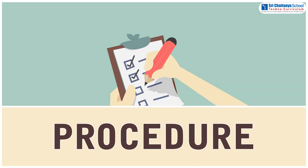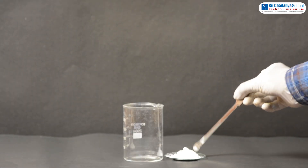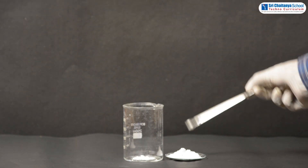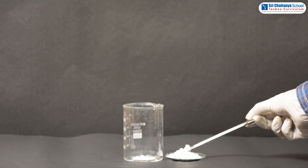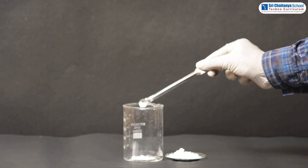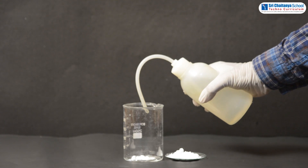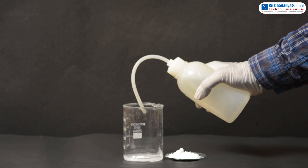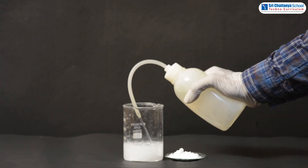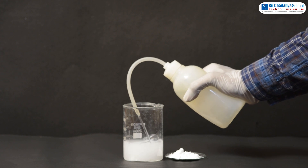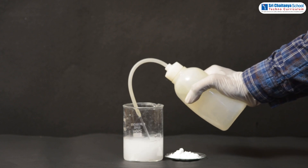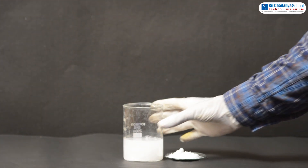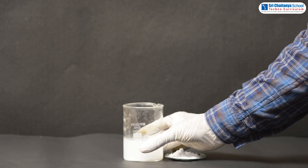Now it is time to see the process. Take some quick lime in a beaker, pour water over the quick lime in the beaker slowly. Touch the surface of the beaker and observe carefully.